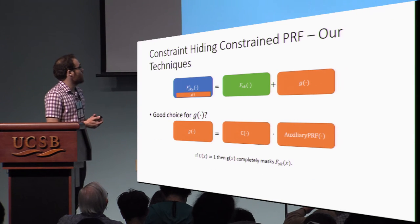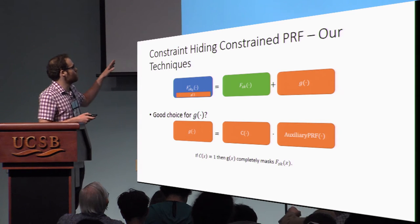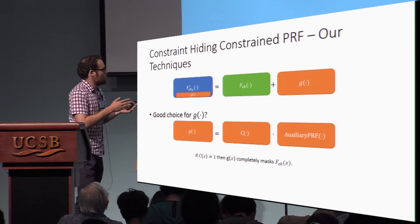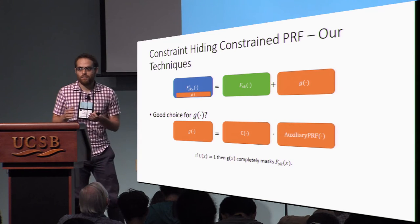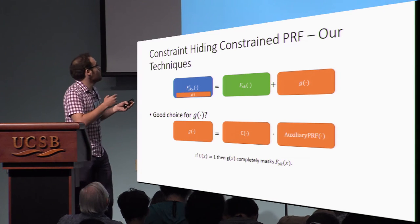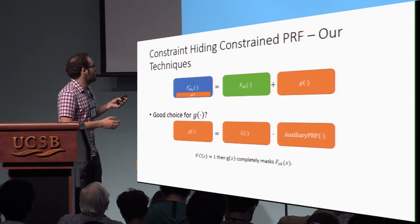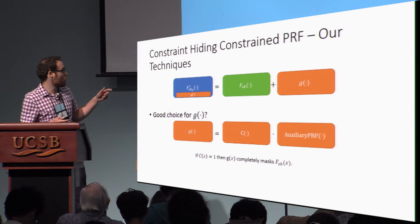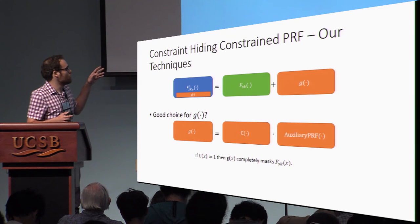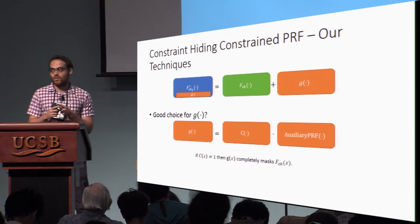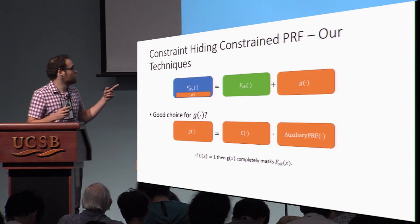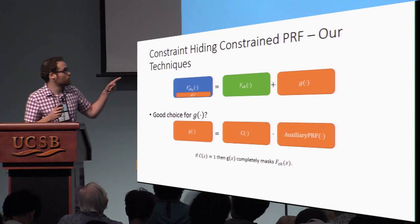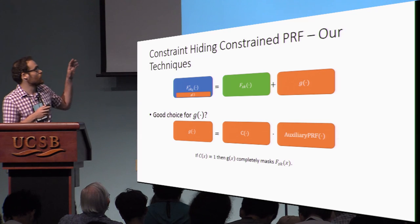With this technique, we set G to be C times an auxiliary PRF. This auxiliary PRF can be any PRF based on any assumption; it's independent of the PRF we are constructing. With this G defined, it's not hard to see why we now have a constraint-hiding constrained PRF. When C of X equals zero, G also equals zero, so the true value and the constrained value match. But when C equals one, the value of G equals the value of the auxiliary PRF, and that completely hides the true value of the PRF.